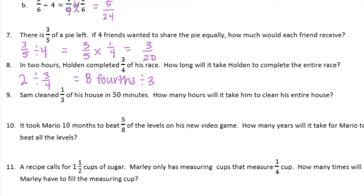Divided by 3 fourths would be equal to 8 divided by 3, or 8 thirds. And if we make that back into a mixed number, 3 goes into 8 two times with 2 left over. So we would have 2 and 2 thirds. And that would be hours.